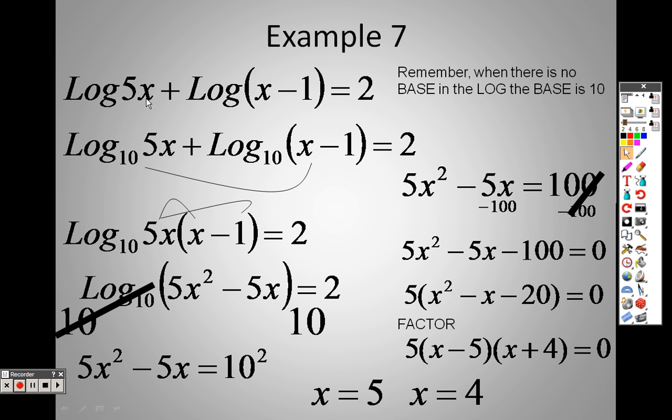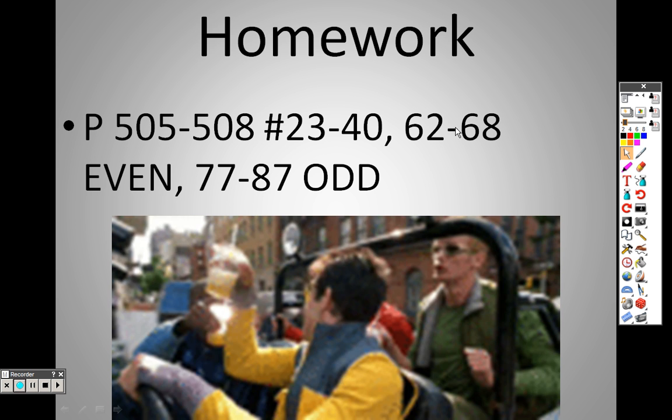Plug in a 4. You get 5 times 4 is 20, and that's 3. 4 minus 1 is 3. So 20 times 3 is 60. So log 60 divided by log 10 will also give you the 2 there as well.